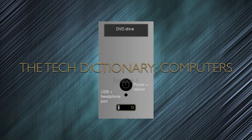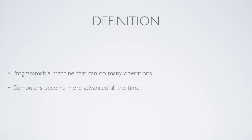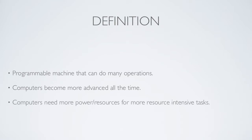So in this episode, which is the first episode, I'm talking about computers because it is something that has many different categories, and quite a lot of these videos will be about computers. The exact definition of a computer, or the Wikipedia definition, is basically a programmable machine that can do different operations. Computers can do many operations per second or millisecond, and they get more advanced all the time. About 10 or 20 years ago, people had about 50 kilobytes or 1,000 bytes of RAM. Now, 4 gigabytes or 4 billion bytes of RAM is quite a small amount.